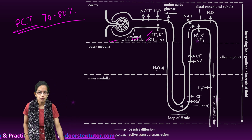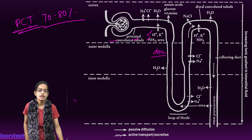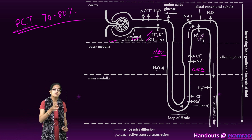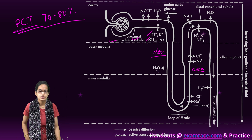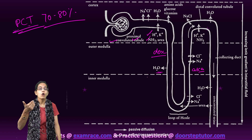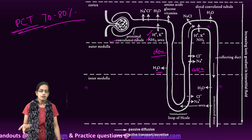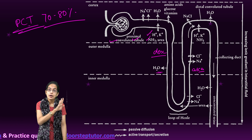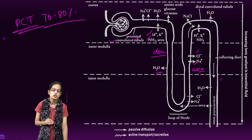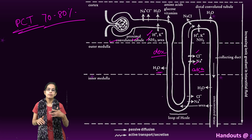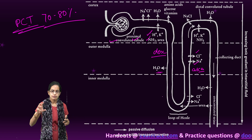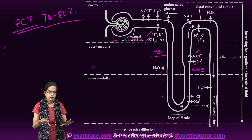The loop of Henle has a descending limb and an ascending limb. The descending limb is permeable to water — water can move out — but it does not allow movement of electrolytes. However, the ascending limb is impermeable to water but permeable to electrolyte transport, so sodium ions and chloride ions can move out of the ascending limb of the loop of Henle.